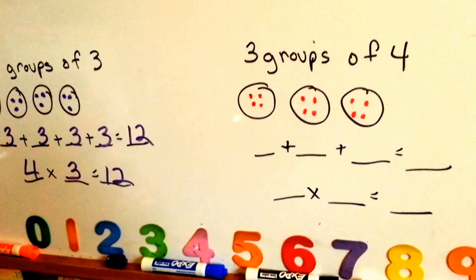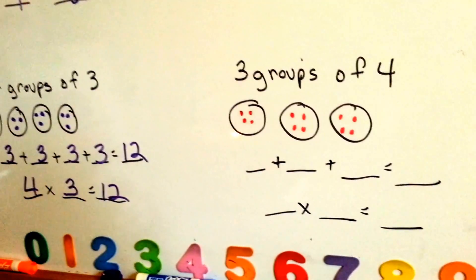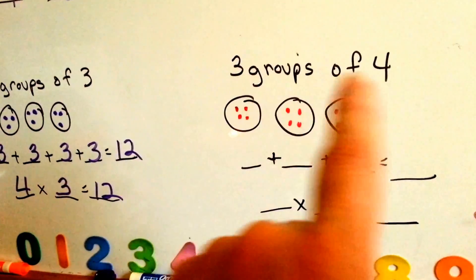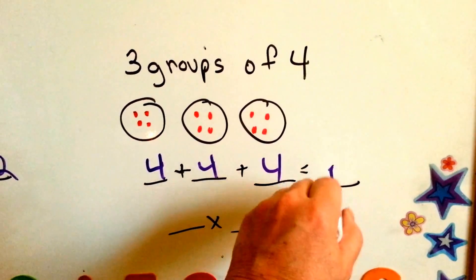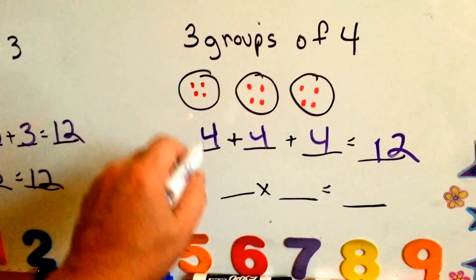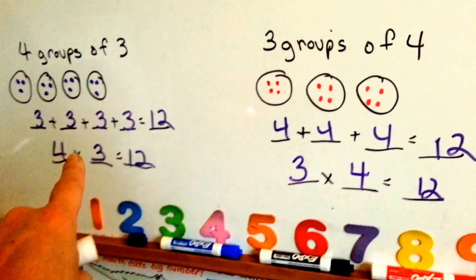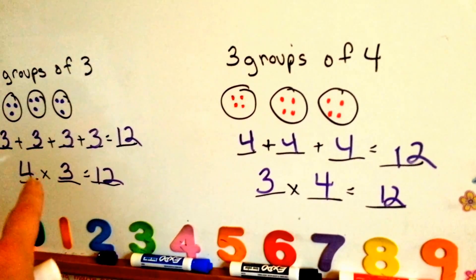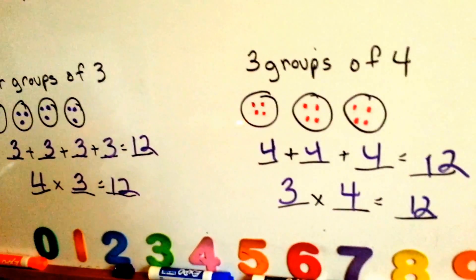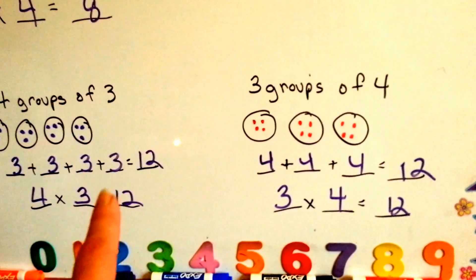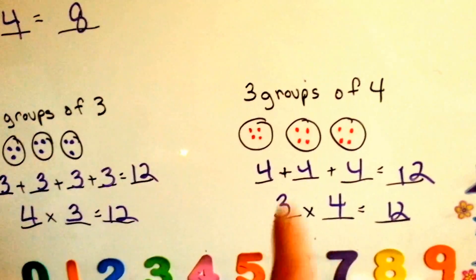Now compare this one with this one. See how we had 3 four times? Now we have a 4 three times. We had 4 groups of 3, now we have 3 groups of 4. 4 plus 4 plus 4 equals 12. 3 times 4 equals 12. It doesn't matter if you say 4 times 3 or 3 times 4 — they both equal 12. That's the commutative property. Do you remember that from our previous video? 4 plus 4 plus 4 and 3 times 4 are the same thing.